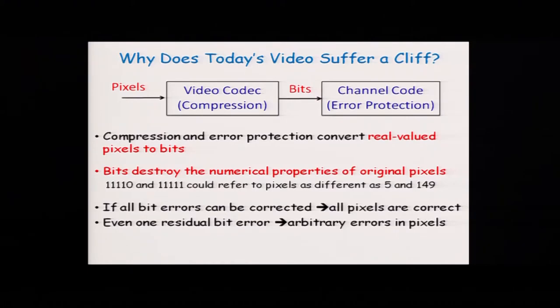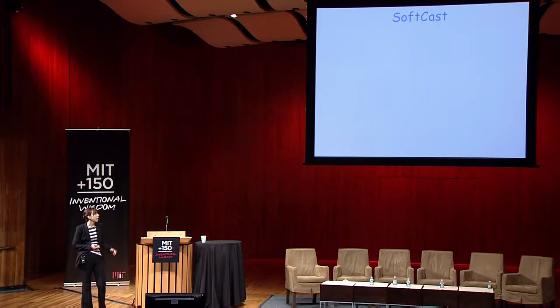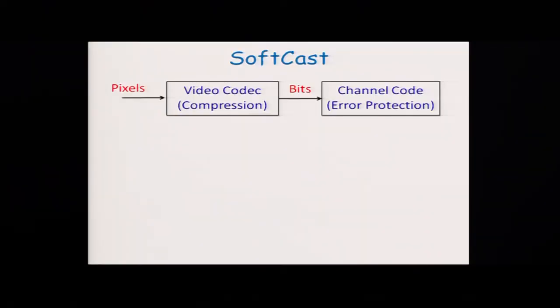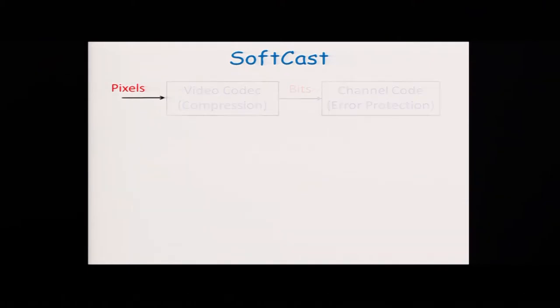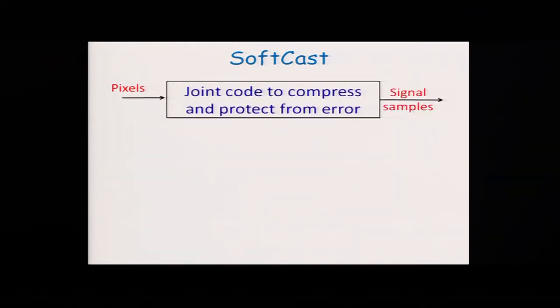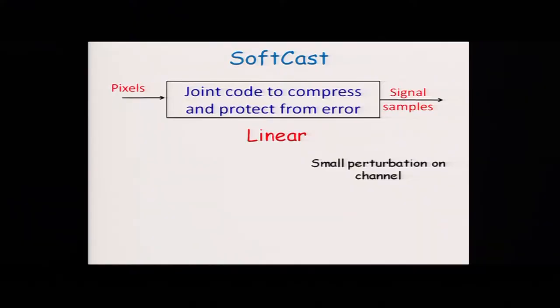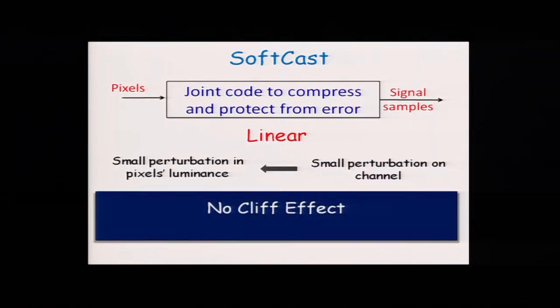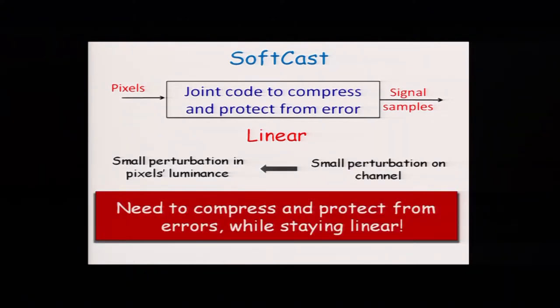Here's our solution, called SoftCast. Instead of using two components — one to compress the video and one to protect it from errors — we have one code that both compresses the video and protects it from errors without transforming it into bits. It operates over real numbers. The key property of this code is that it is linear. As a result of this linearity, small perturbations on the channel that affect the transmitted signal have a linear impact on pixel values, producing small perturbations in pixel luminance and small perturbations in your video — so no cliff effect.